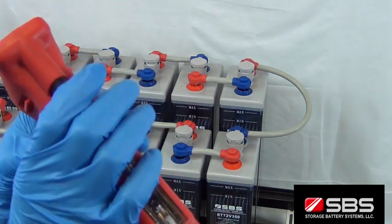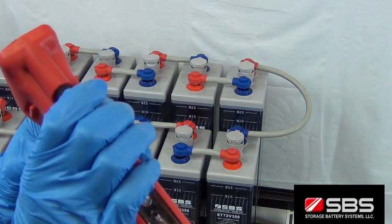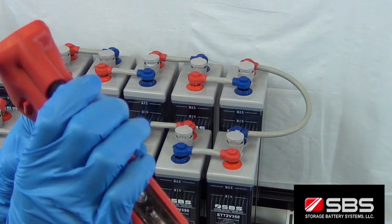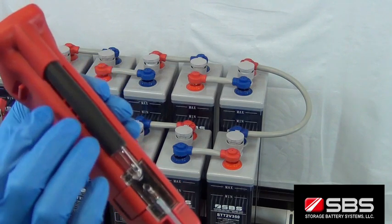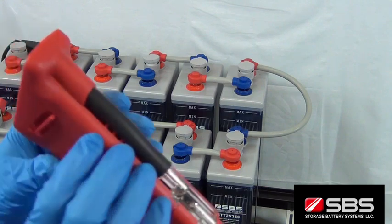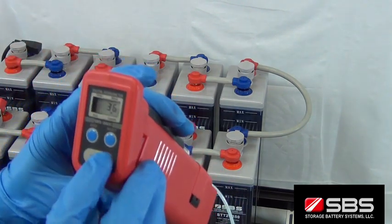Now, find the sample collection pump. It is the rubberized area on the back of the unit. All you need to do is insert the sample tube into a cell and squeeze the bulb so a sample of electrolyte is drawn into the chamber.